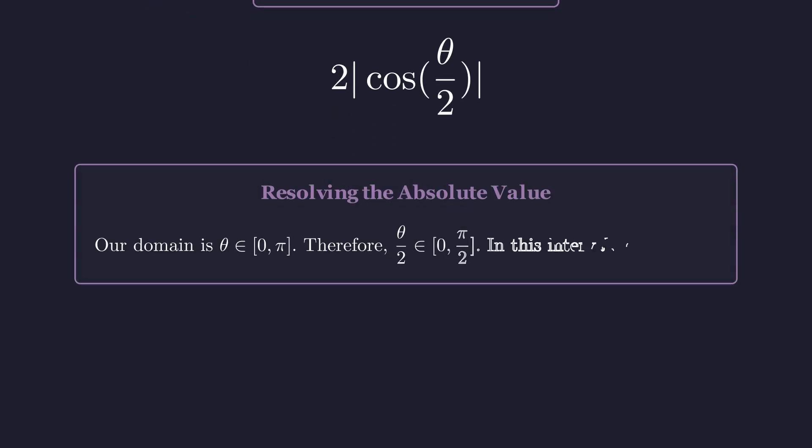But here's why we can drop the absolute value bars. Our domain for theta runs from 0 to pi, which means theta over 2 runs from 0 to pi over 2. In that range, cosine is always positive. So the absolute value signs disappear, leaving us with 2 cosine of theta over 2.